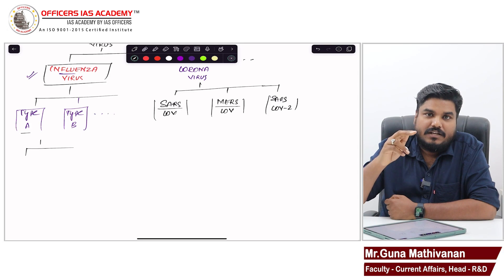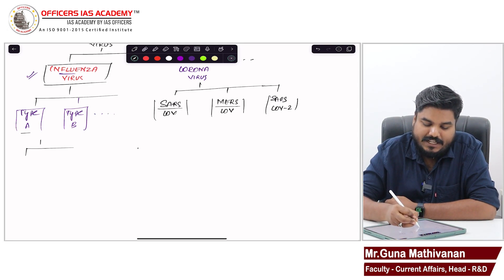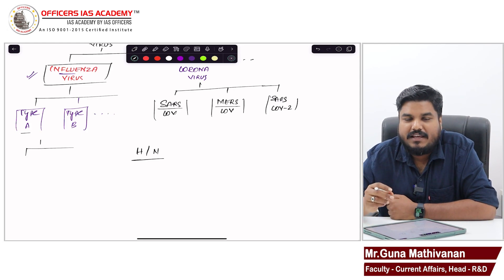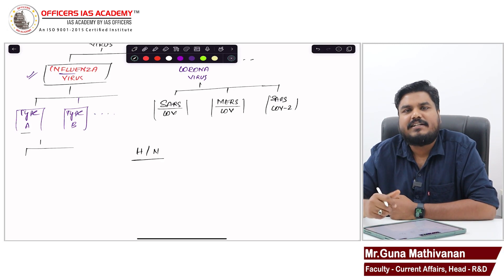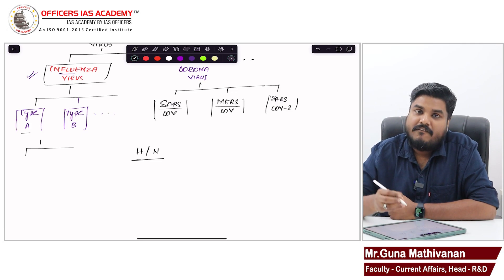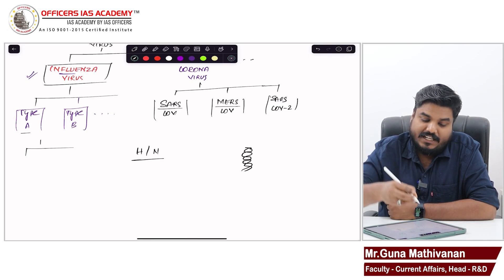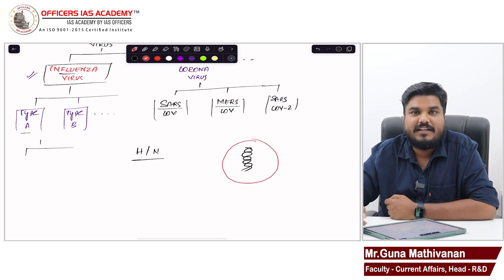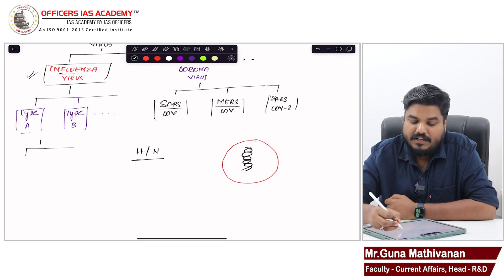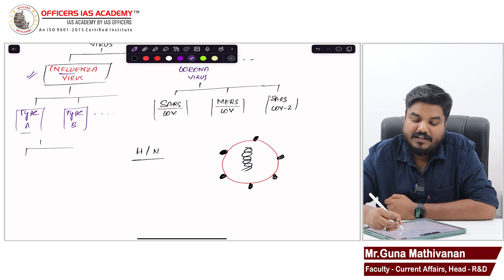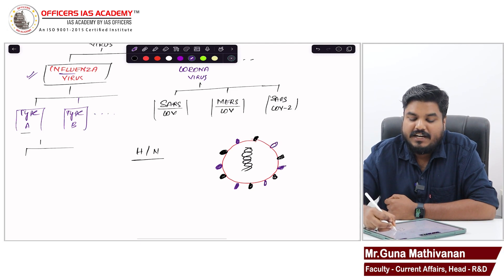Particularly, two types of proteins. One is called H, another is called N. H refers to hemagglutinin, N refers to neuraminidase. Don't try to remember the exact name. Just understand that a virus contains genetic material surrounded by a protein layer. On the surface of this virus, you can find different types of proteins.